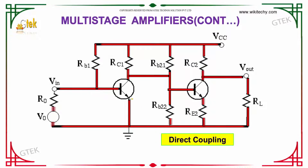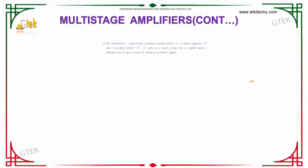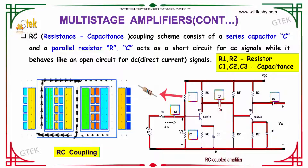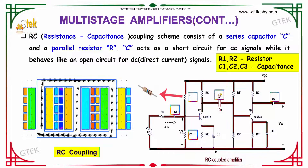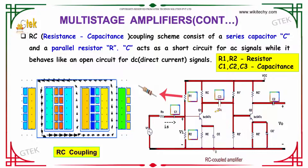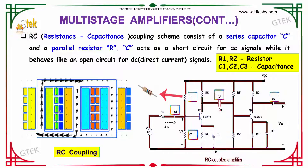For direct coupling, one amplifier is connected directly to the other amplifier. That is referred to as direct coupling — from voltage in, you get your voltage out. For RC coupling, the resistance-capacitance coupling scheme consists of a series capacitor C and a parallel resistor R. The capacitor acts as a short circuit for AC signals while behaving as an open circuit for DC signals. This is your RC coupling.